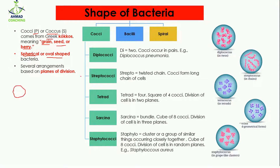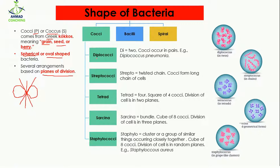There are several arrangements of cocci, and these arrangements are based on the plane of division — how the bacteria are dividing. The bacteria can divide like this, or like this, or like this.